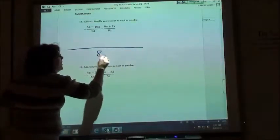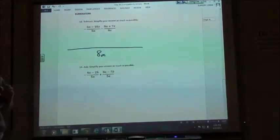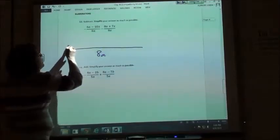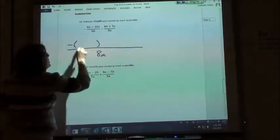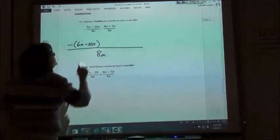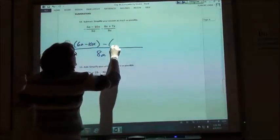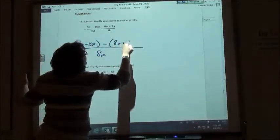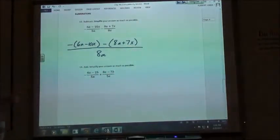8a is my denominator. And I'm going to have a minus sign, 6a minus 10x, and then I have a minus sign and 8a plus 7x. So I put the minus and then I put parentheses around my tops.